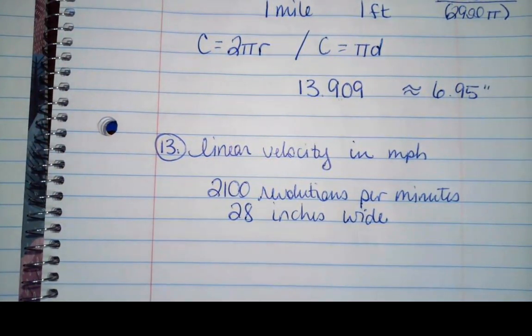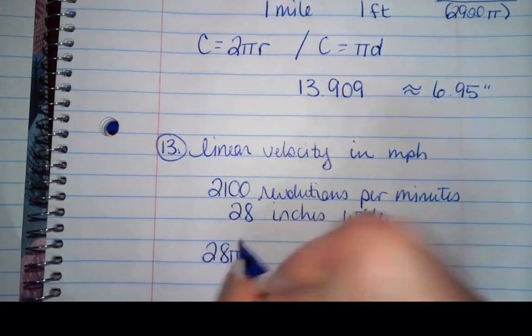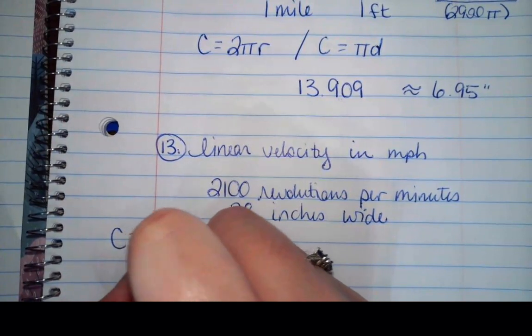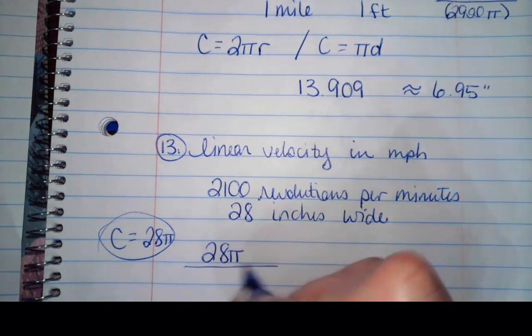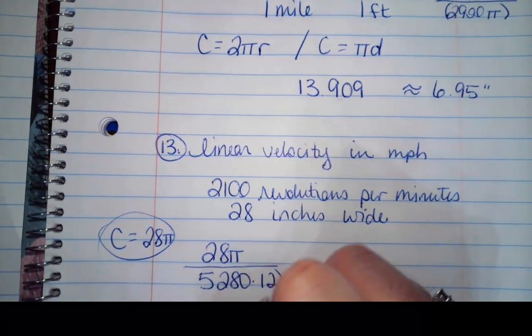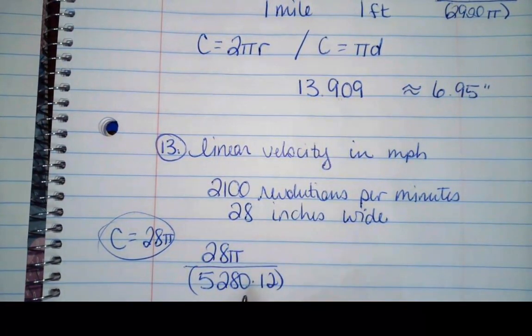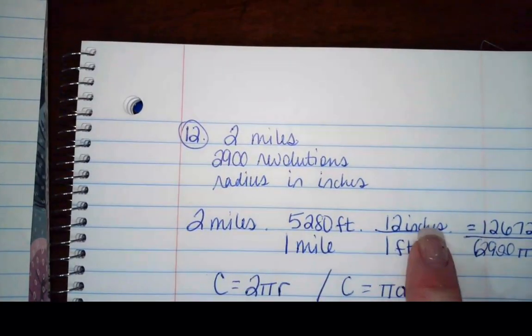So what I have first is 28π is going to be my circumference. I'm going to divide that by 5,280 times 12, because I'm changing it into miles. So this is in inches, I'm changing this into miles, using the same process that we used up here.